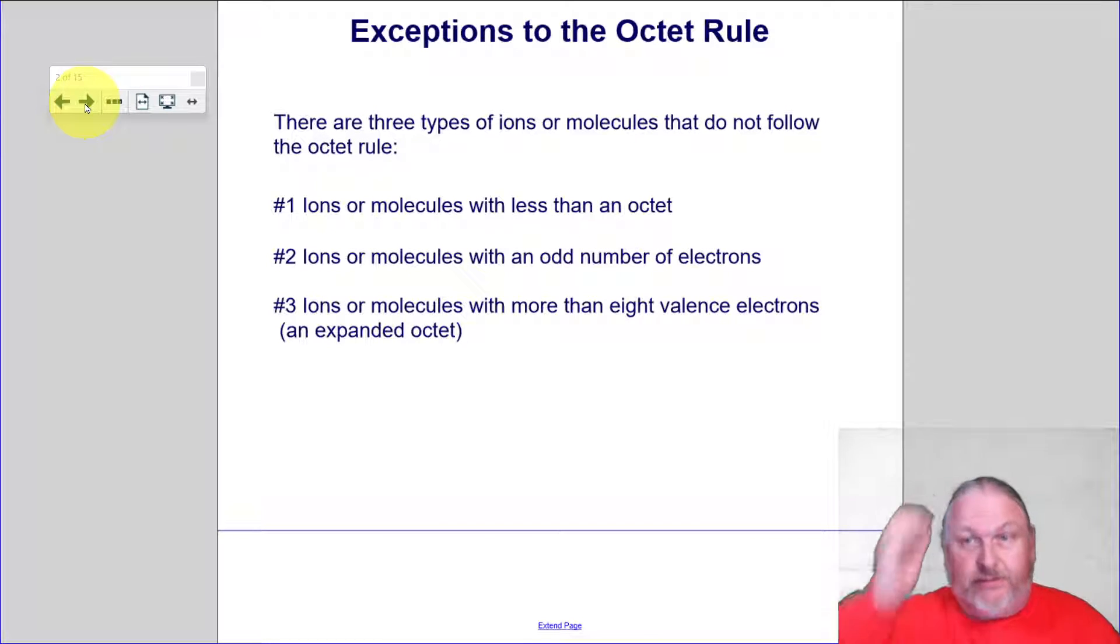Let's remember this. There are three types of ions or molecules that don't follow the octet rule. Number one are ions or molecules with less than an octet. Number two, ions or molecules with an odd number of electrons. Then ions or molecules with more than eight valence electrons. We call that an expanded octet.